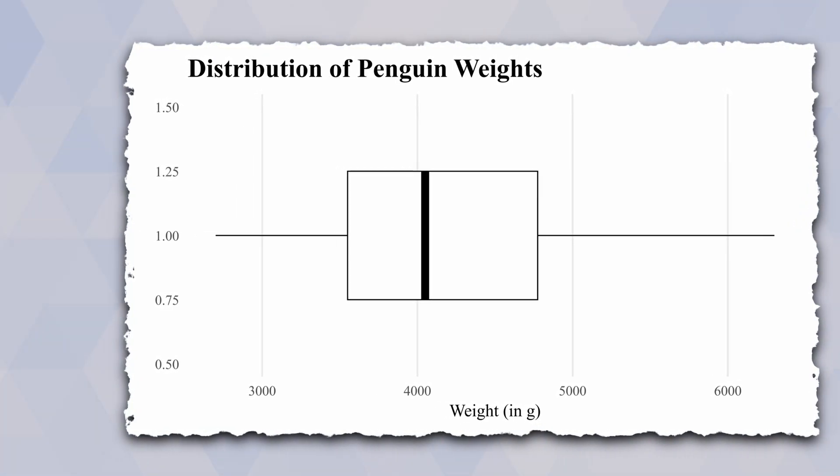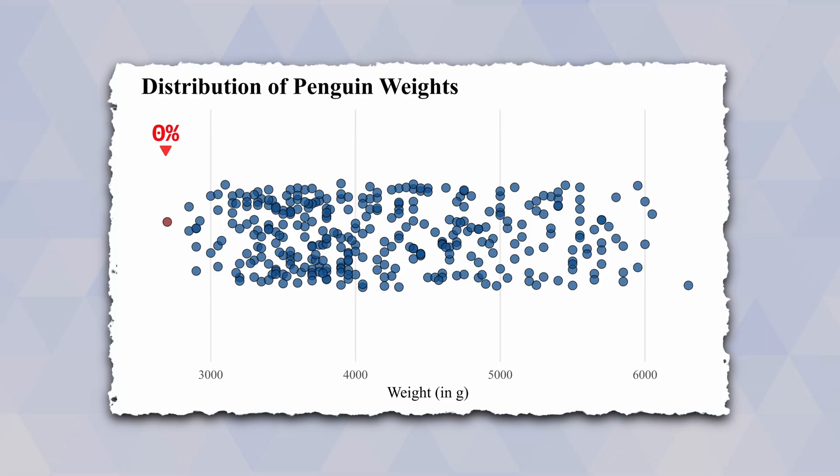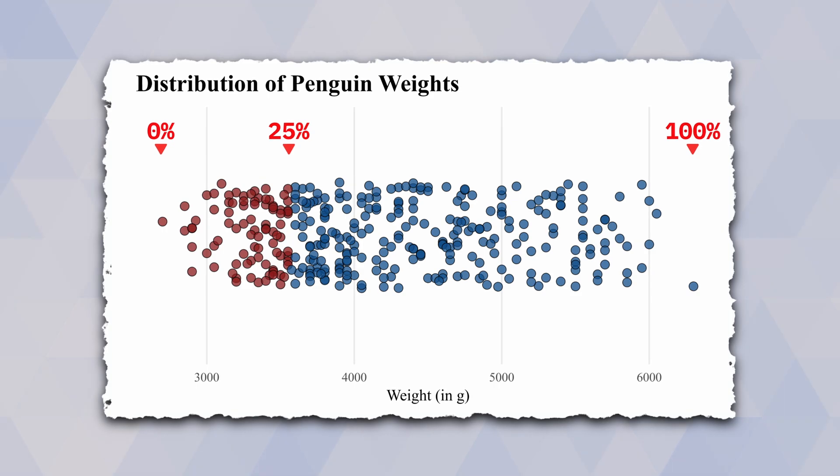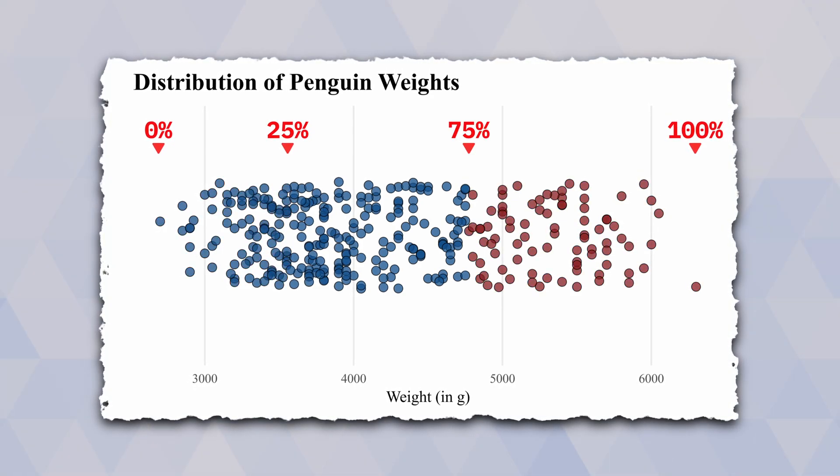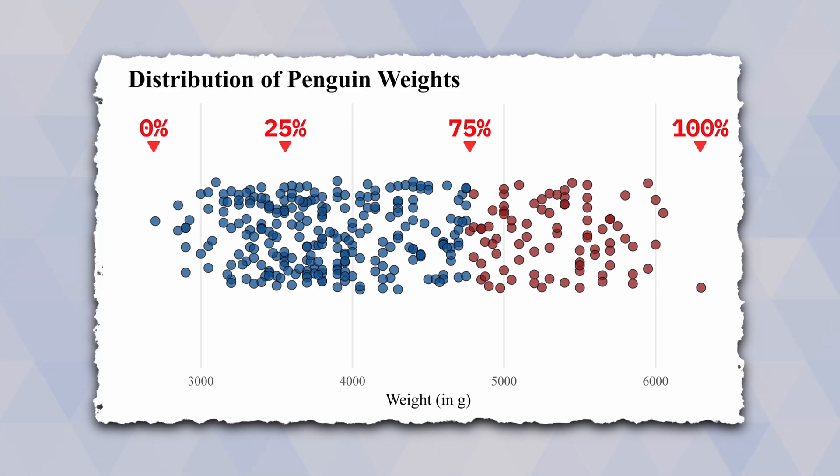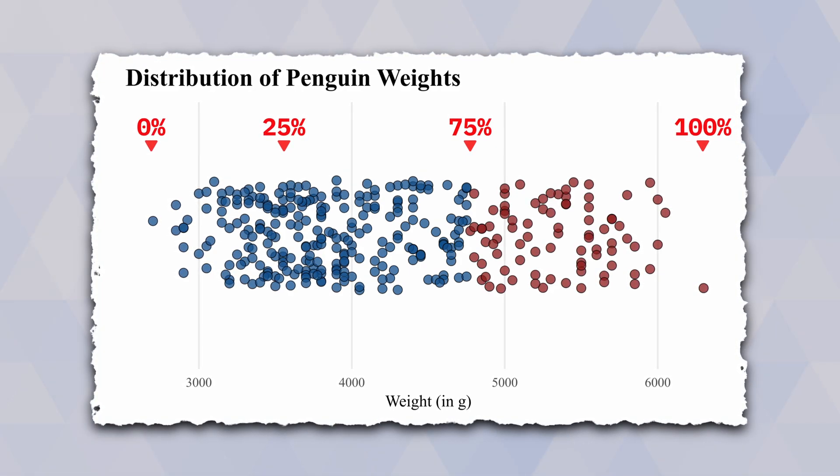Let's check out what a boxplot does. First, it computes key quantities like the lowest and highest value, and the points where 25% of the data are lower than that, and then the point where 75% of the data are lower than that. Once these values are calculated, the boxplot can be assembled by just connecting the dots.